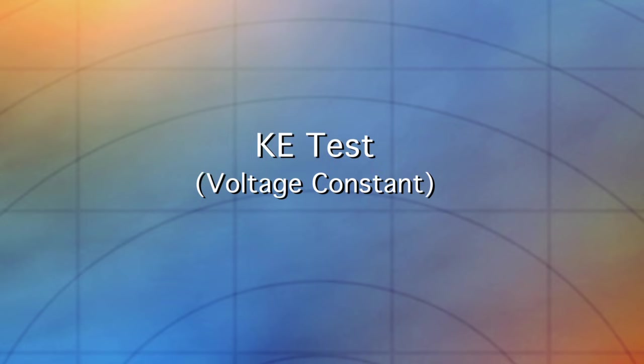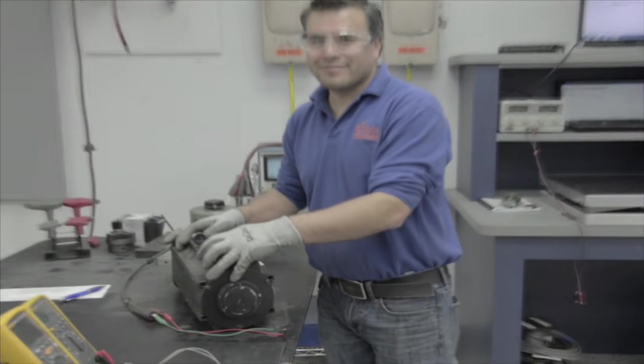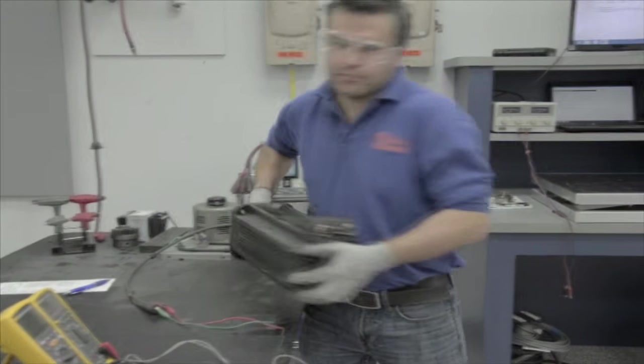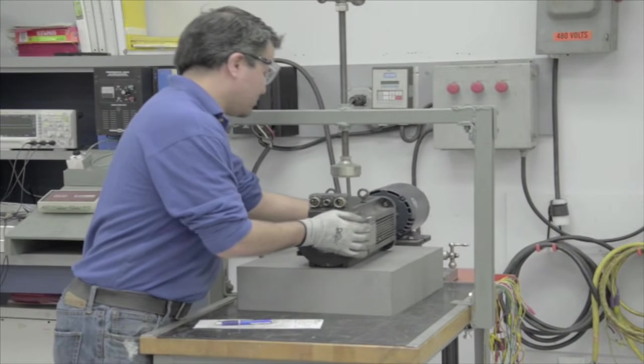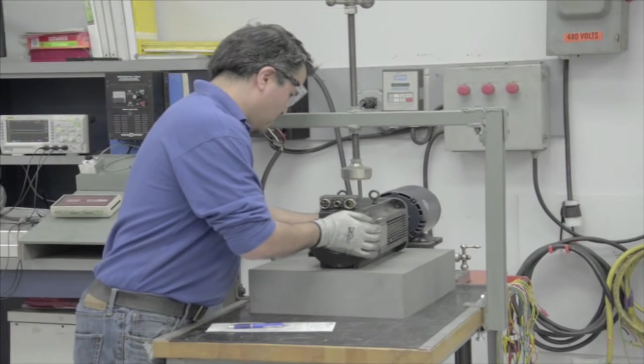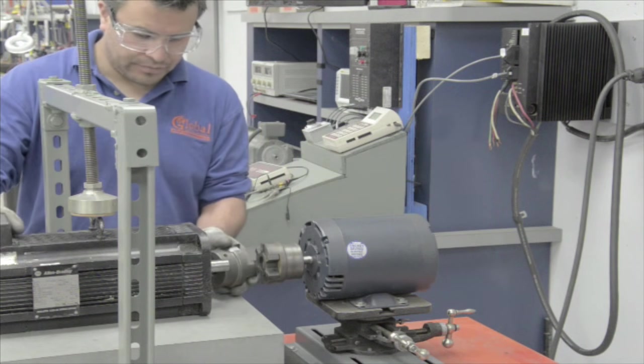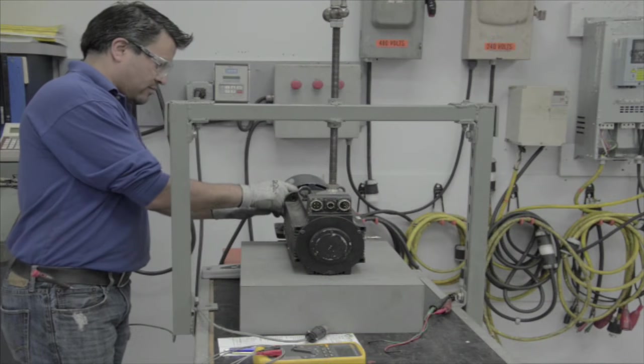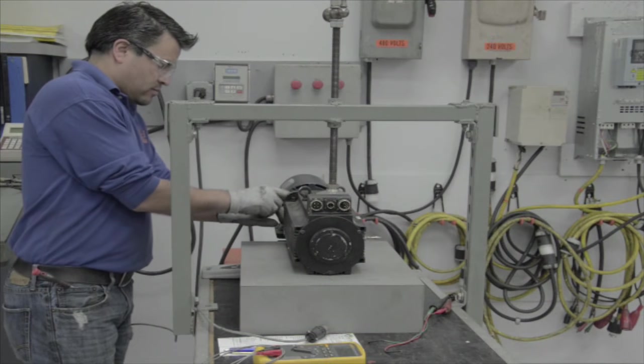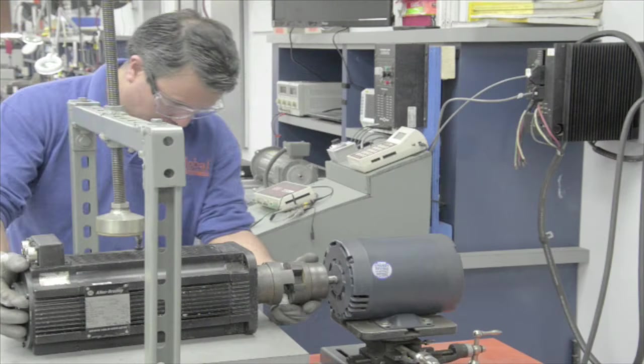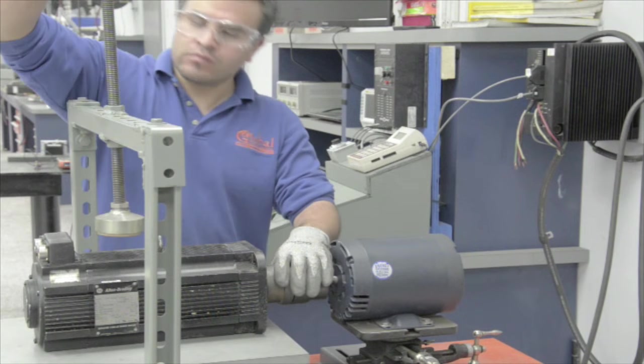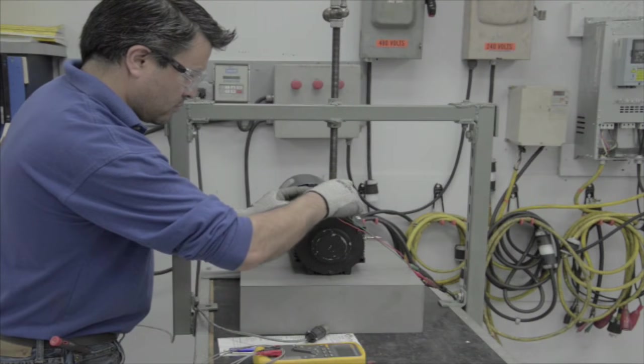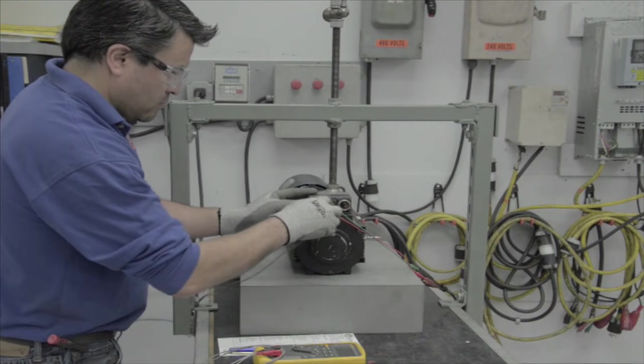The technician is now moving to the KE testing station. The KE test tests the condition of the magnets inside the motor. If the magnets are good, there won't be any problems with the torque. If the magnets are weak or broken, then torque is lost. The technician will hook the motor to the KE test stand. He will couple the servo motor to an AC motor that is run by an adjustable speed AC motor control. He secures the motor in place and will run the motor.